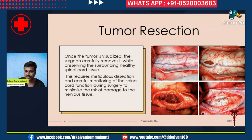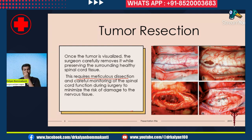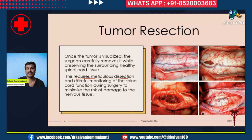You develop the cleavage plane from the surrounding spinal cord and remove the tumor in total. If it is densely adherent, you may have to remove some portions of the tumor. Here the tumor has been completely removed and the spinal cord is well seen. Tumor removal requires meticulous dissection, careful monitoring of spinal cord function — sometimes depending on the financial condition, duration of surgery, and the protocol in your institute. This meticulous dissection minimizes the risk of damage to the spinal cord.